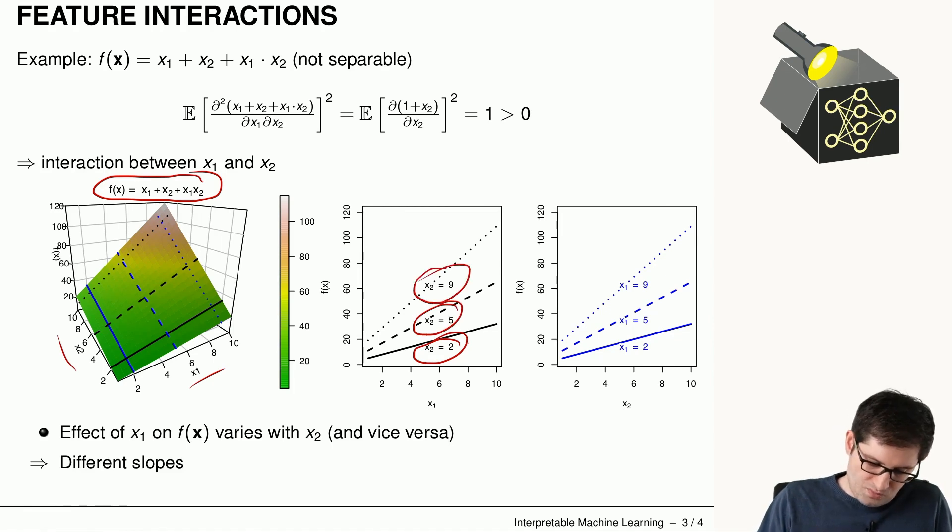which are slices in this direction here. And we will see what happens with x1, the effect of x1, if we look at these three different values of x2.